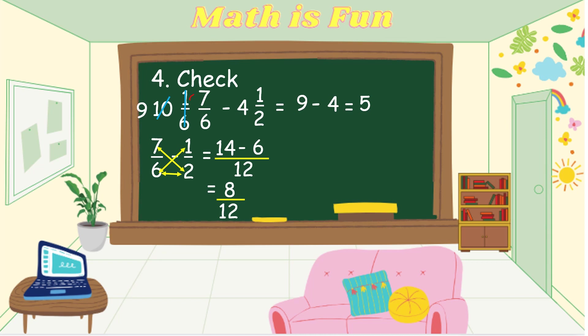We check if 8 and 12 have a common factor. Both are divisible by 4: 8 divided by 4 equals 2, and 12 divided by 4 equals 3. This fraction is added to our whole number 5, giving 5 and 2 thirds. Since 5 and 2 thirds is one of our original addends, our answer of 10 and 1 sixth is confirmed correct.